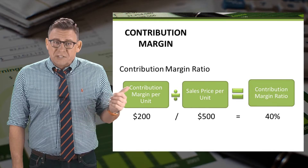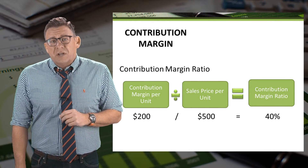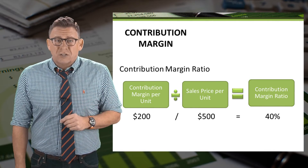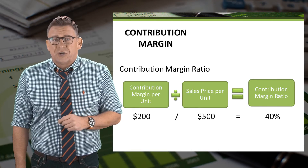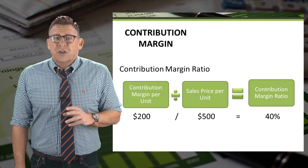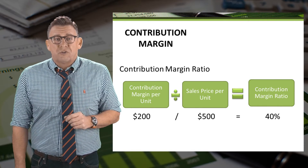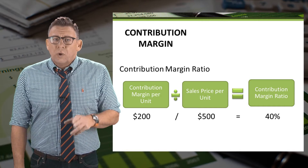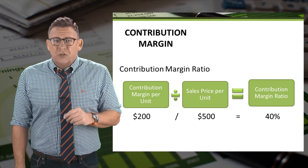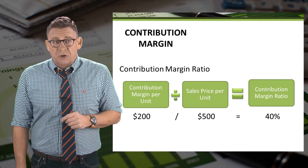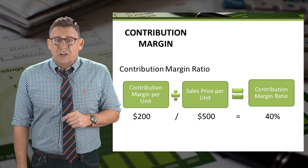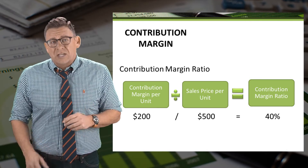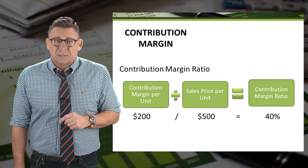In this example, the unit contribution margin is $200 and the unit price is $500, so the contribution margin ratio is 40%. We will use both the unit contribution margin and the contribution margin ratio when we learn about cost-volume profit analysis.